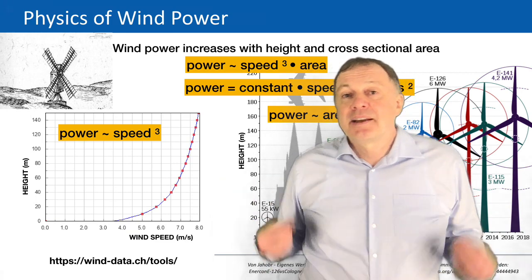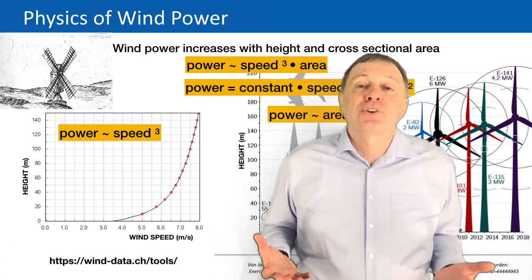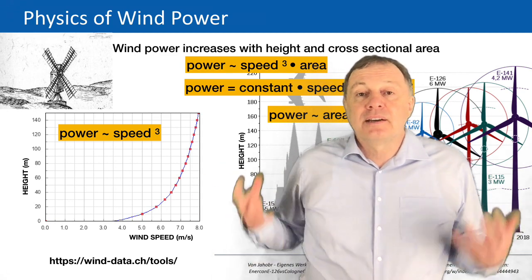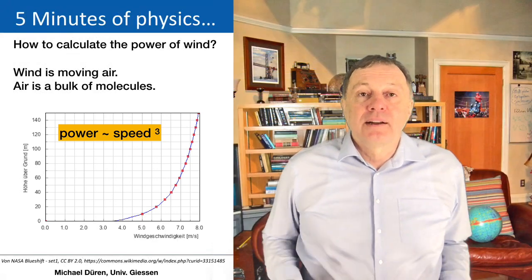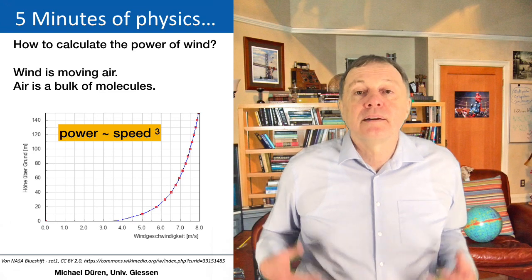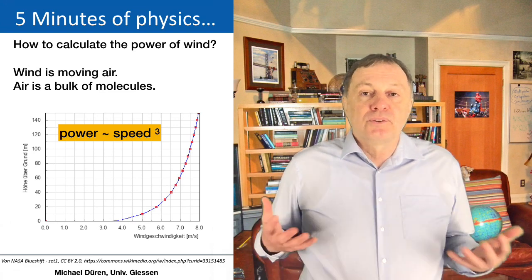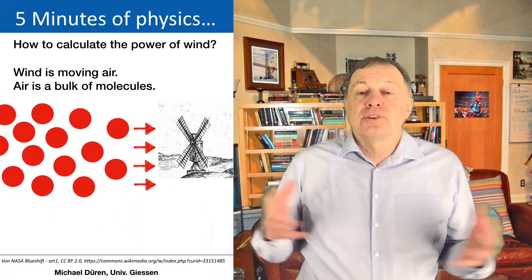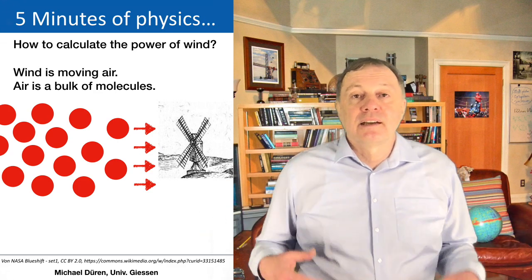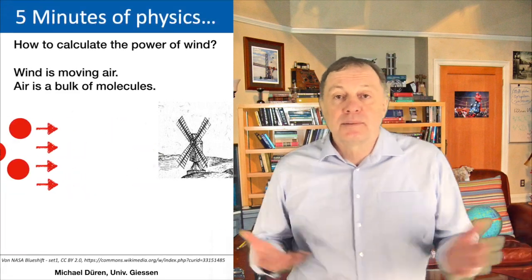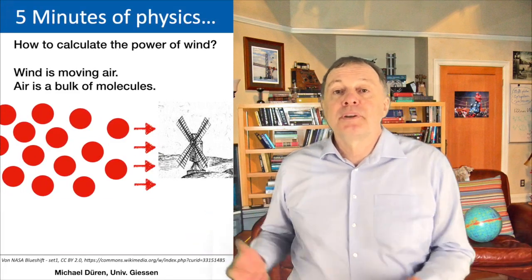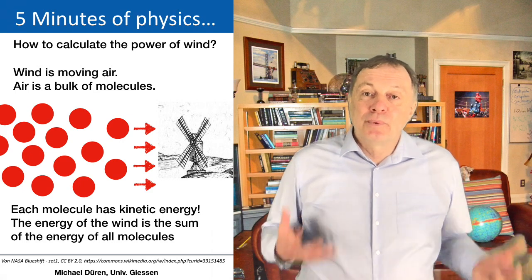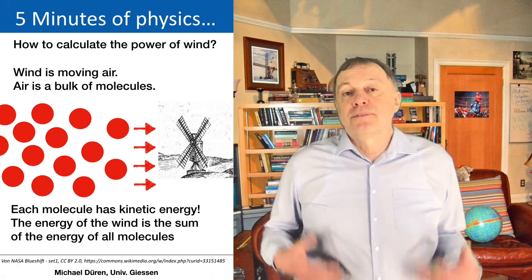Now we have to do a little bit of physics and calculate the power of wind from first principles. Air consists of molecules — air is nothing but a bulk of molecules at a certain distance depending on temperature and density. When there is wind, the air is moving, and each molecule has a certain movement. Each molecule has kinetic energy, and the total kinetic energy of the wind is the sum of the kinetic energies of all molecules.